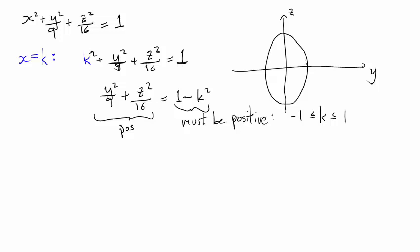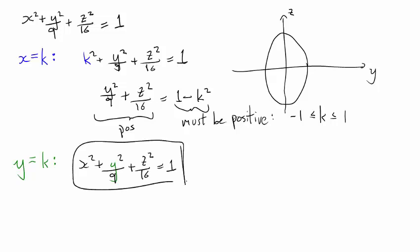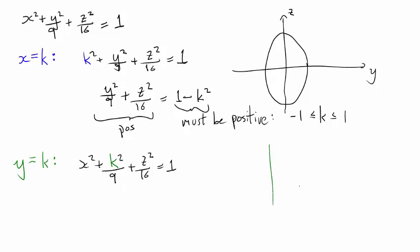Let's do the same exercise, this time with y. Let's restrict y to be a constant value — again I'll use the letter k — and plug this into the equation. We'll have x squared plus k squared over 9 plus z squared over 16 equals 1. Because we've restricted y to the constant value k, this equation involves only variables x and z, so its graph will be in the xz-plane.